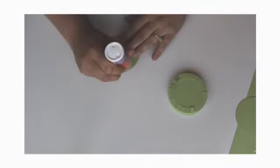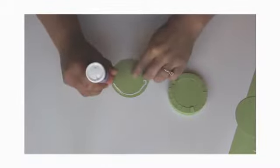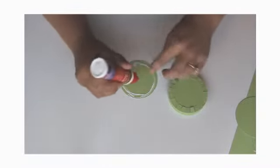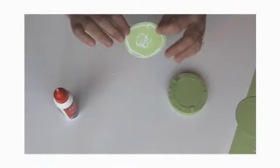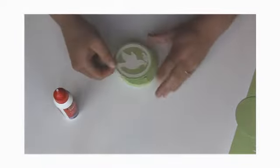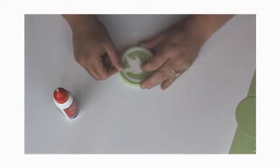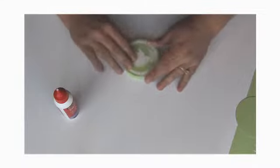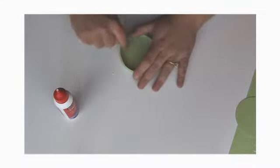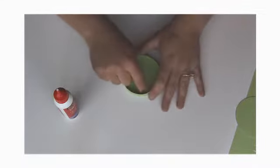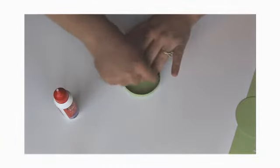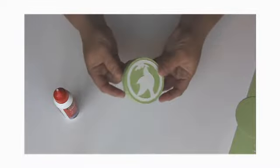Now we're going to take glue and put glue all around the edge and a little bit in the center. Now we're going to pick this up and put it right on top. Turn it over so we can get a good seal on that glue. Put some pressure on there. There you have it. There's the lid.